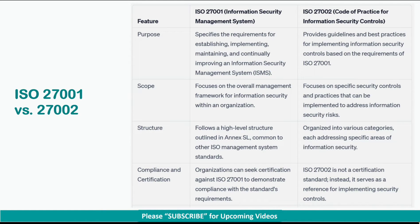ISO 27001 specifies the requirements for establishing, implementing, maintaining, and continually improving an information security management system. Whereas ISO 27002 provides guidelines and best practices for implementing information security controls based on the requirements of ISO 27001.